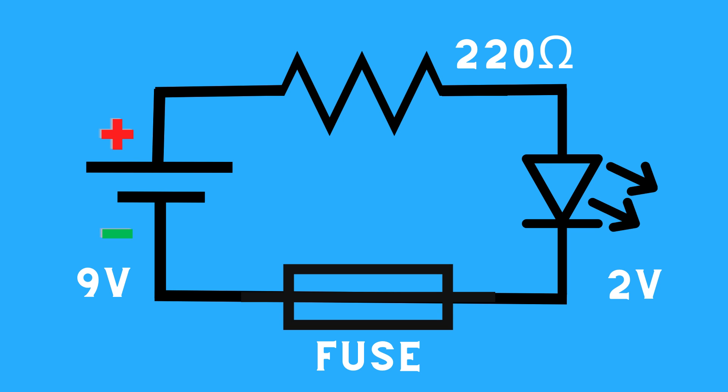In our scenario, the power source is a 9-volt battery, the diode is a 2-volt red LED, and the resistor is rated at 220 ohms. Connect the fuse in series between the battery and the LED.